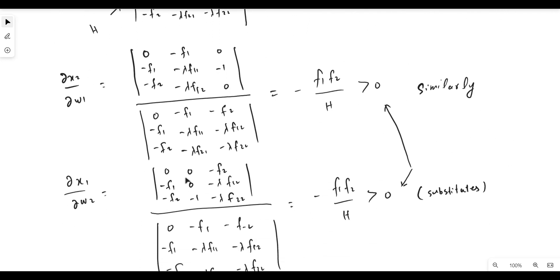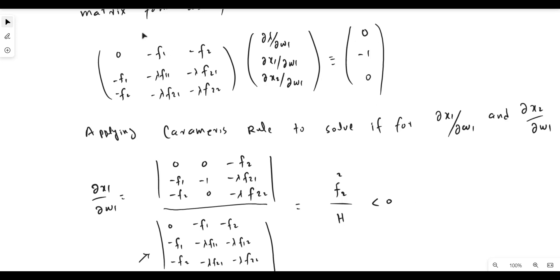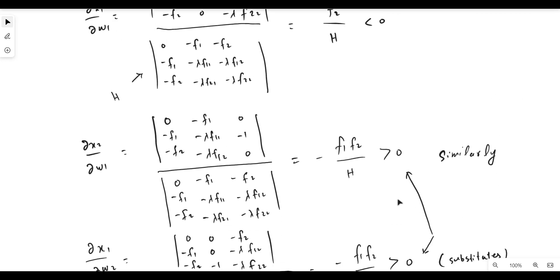For ∂x2/∂w1, we replace the third column of the matrix and divide its determinant by the bordered Hessian determinant. The result is positive because the numerator is negative — normalizing by the first row, the first and last terms are zero, leaving a 2×2 submatrix whose determinant is negative — so the overall ratio is positive.